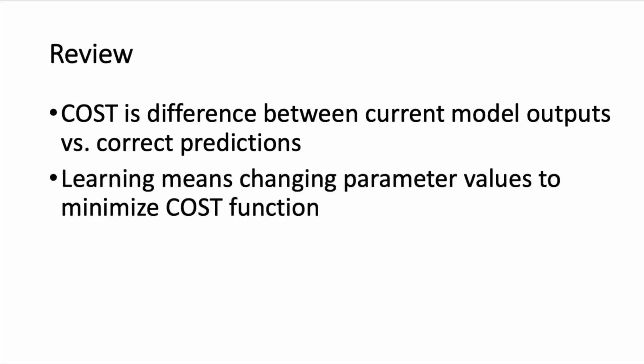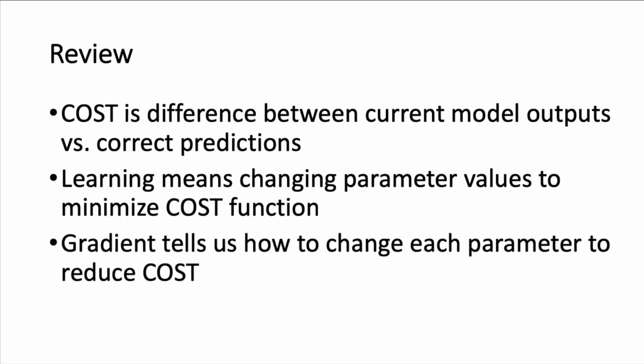We said that learning was changing our parameter values to minimize this cost function. We also covered gradient descent and talked about how the gradient tells us how much we should change each of our parameter values in order to take steps toward decreasing our cost function.